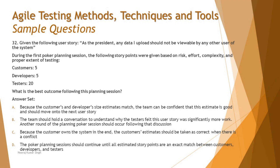Option B says: the team should hold a conversation to understand why the tester felt this story was significantly more work, and another round of planning poker should occur following that discussion. That's exactly the correct approach. It's all about knowing the process of planning poker — if you know it, you know the answer.